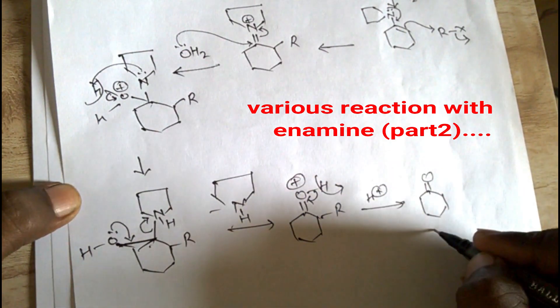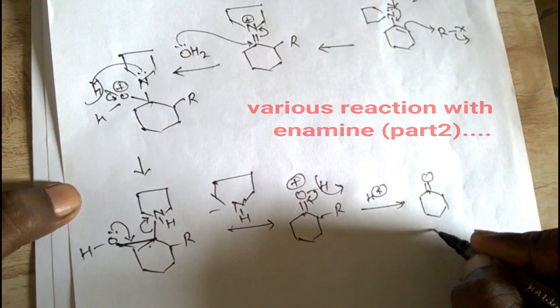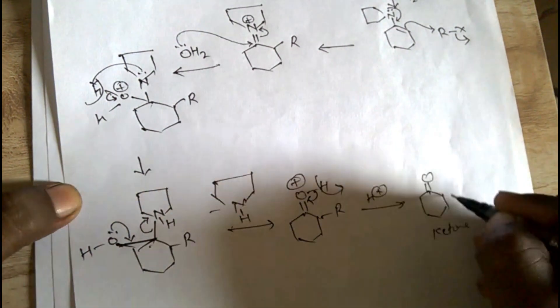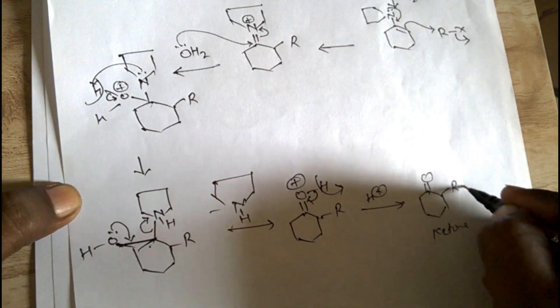This is your ketone — this is what we call the Stork enamine alkylation product.